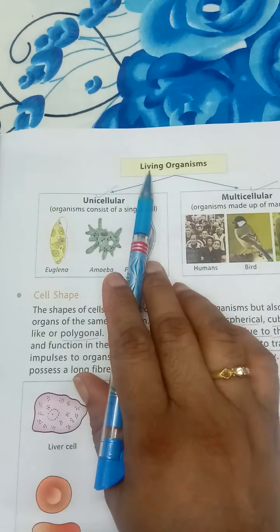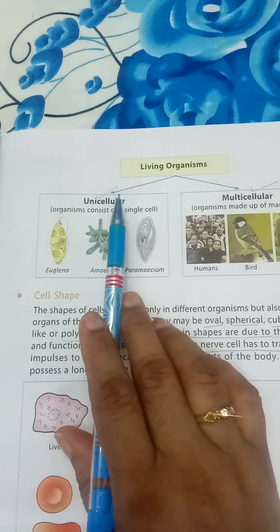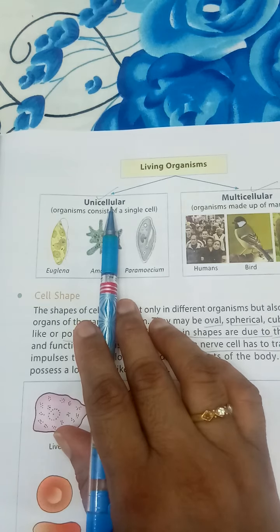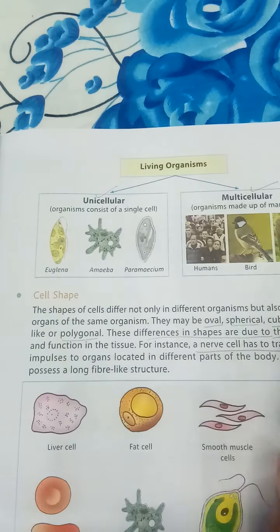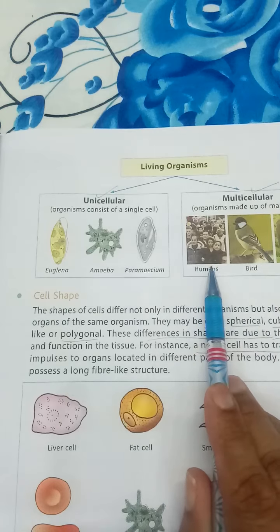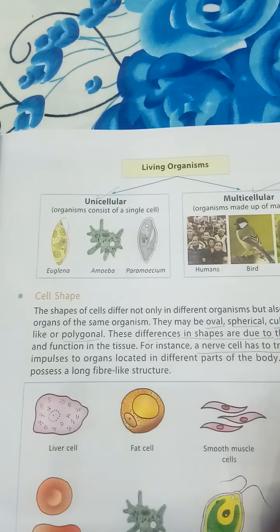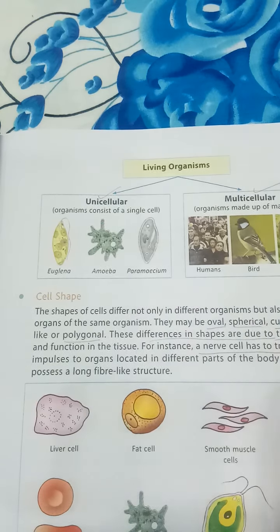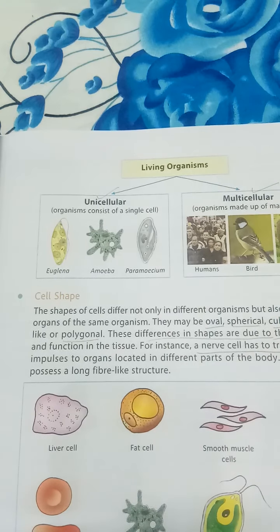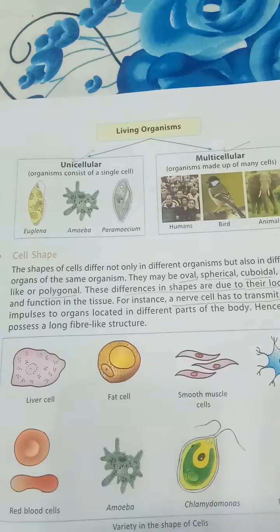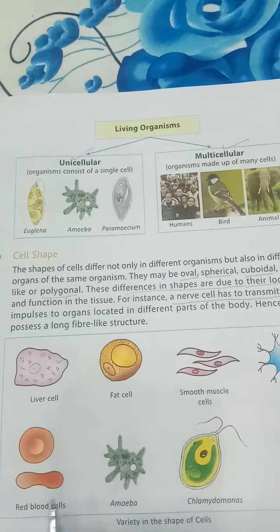Multicellular organisms are made up of many cells. Living organisms are divided into two categories: unicellular and multicellular. Multicellular examples include human beings, birds, and animals — all are made up of a large number of cells.